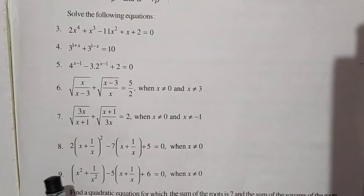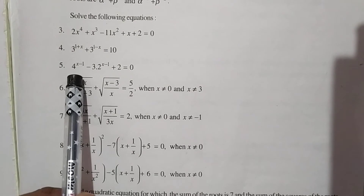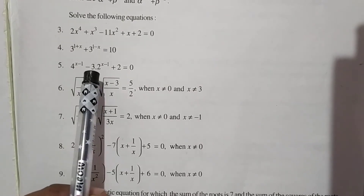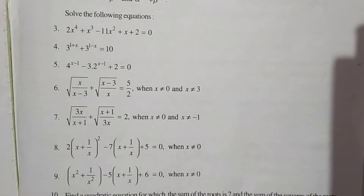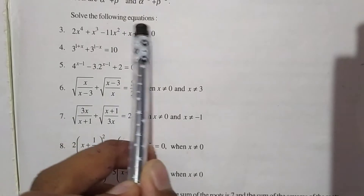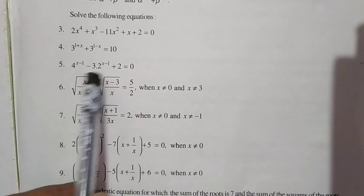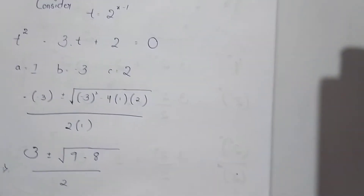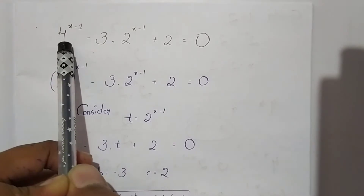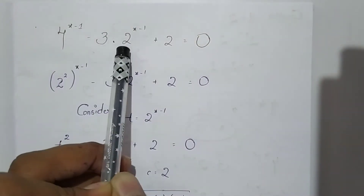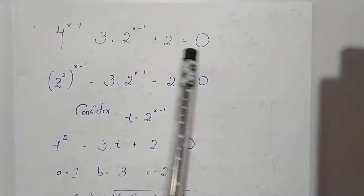Hello guys, in this video we will solve the fifth question: 4 to the power of x minus 1, minus 3 into 2 to the power of x minus 1, plus 2 is equals to 0. We need to solve this equation to get the values of x that satisfy it. This is the given equation: 4^(x-1) - 3·2^(x-1) + 2 = 0.